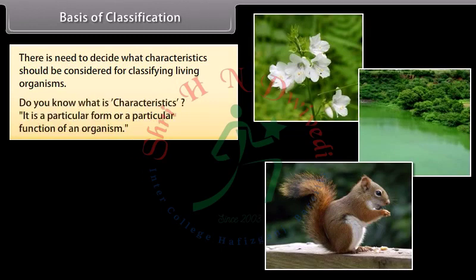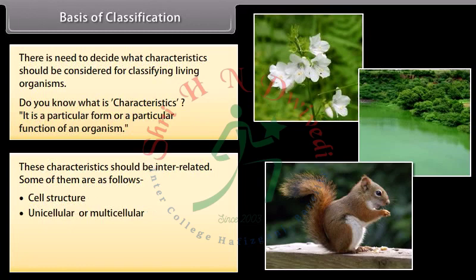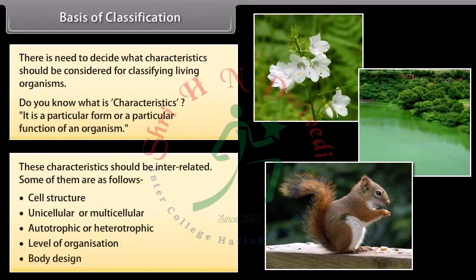A characteristic is a particular form or a particular function of an organism. These characteristics should be interrelated. Some of the characteristics used for classification are: cell structure, whether unicellular or multicellular, autotrophic or heterotrophic, level of organization, and body design.